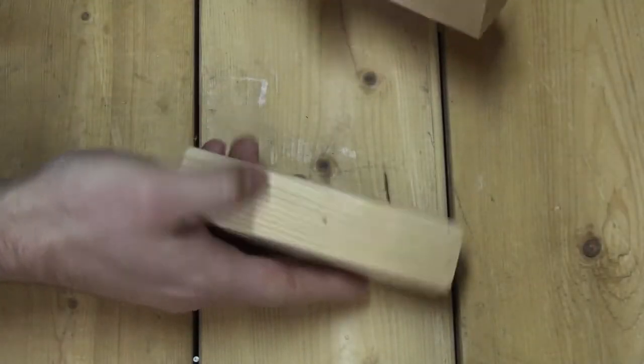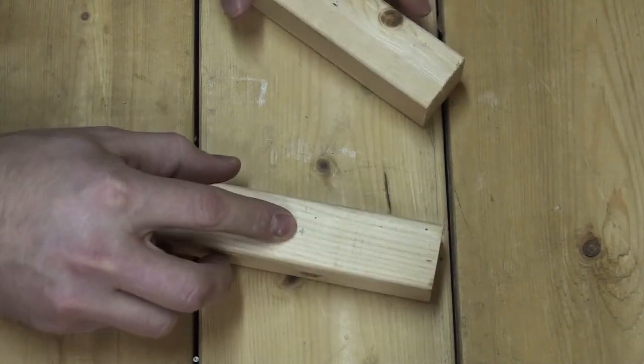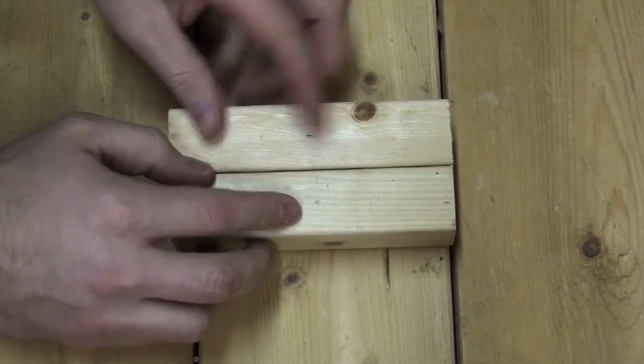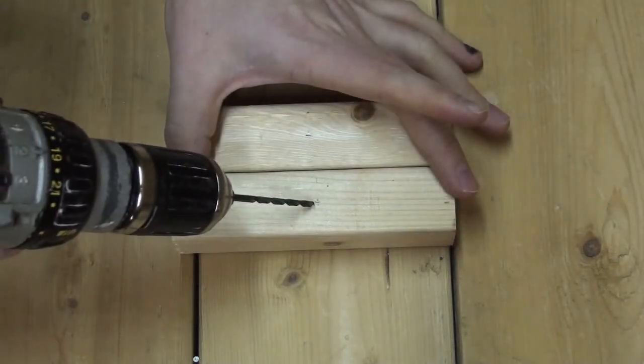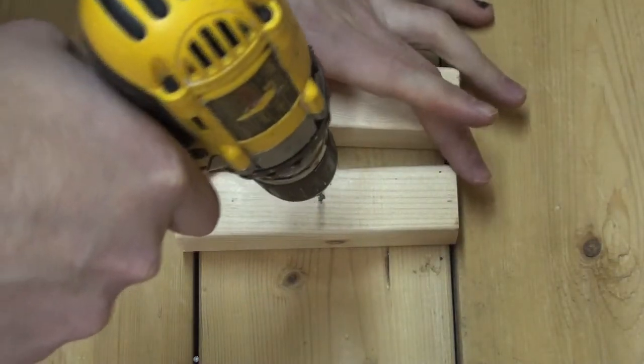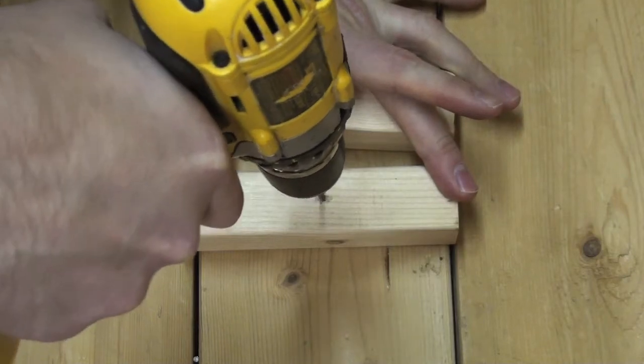Next, take your blocks of wood and mark the center on both. Once your drill bit is selected, simply drill a hole at each marked reference spot on the blocks of wood.